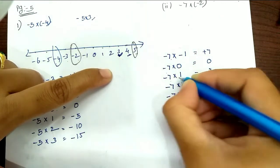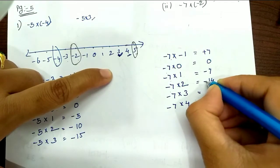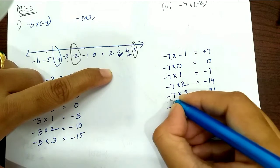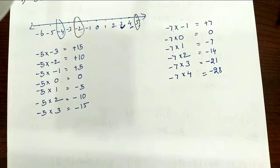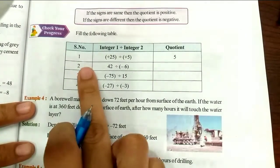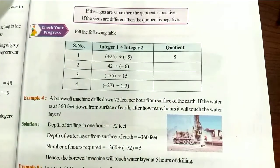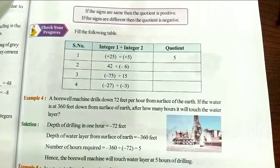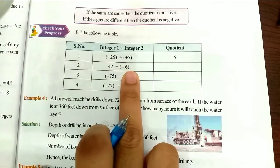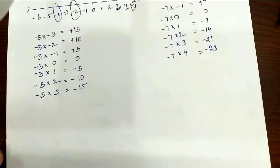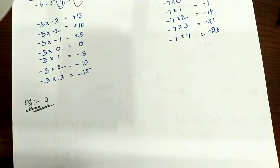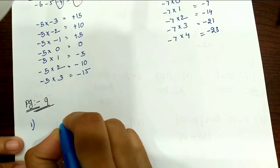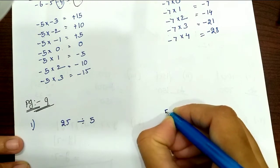Next, we get the progress. Check your progress. Now I will discuss this table. This is a number here; we will divide this in quotient. We will divide in 42 and get the quotient. Now here we have page number 9. Let's check your progress. First, we will divide in quotient: plus 25 divided by plus 5, quotient is 5.